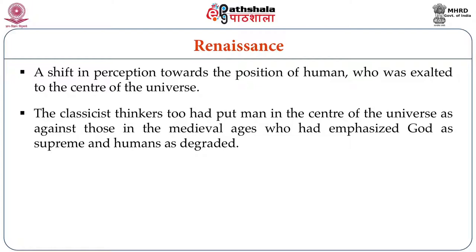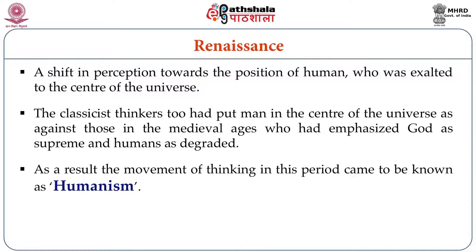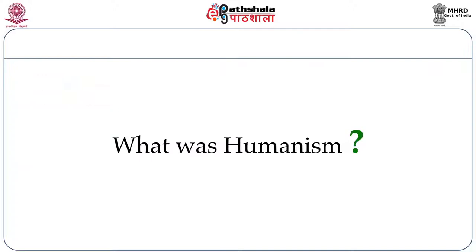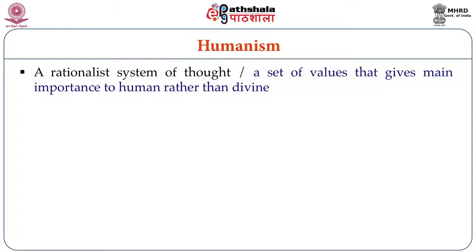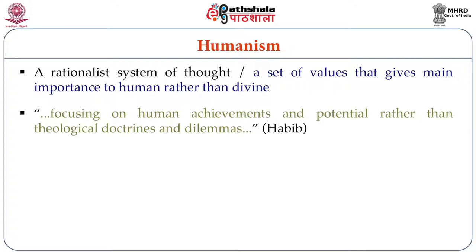Because in the medieval ages, the priests emphasized God as supreme and humans as degraded. As a result, there was a cultural movement during the Renaissance, and this came to be known as humanism. Humanism was a rationalist system of thought, a set of values that gave main importance to humans rather than the divine. The focus was on human achievements and human potential, rather than theological doctrines and dilemmas.